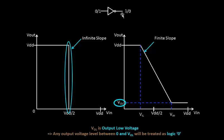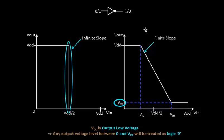VOL, present at the output, should lie in the range 0 to VIL to be recognized as logic 0 at the next stage. This makes sense because the output of this stage is the input to the next stage, and that input must lie in the range 0 to VIL to be detected as logic 0.